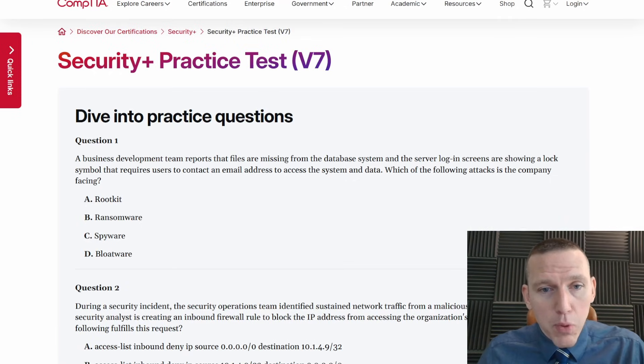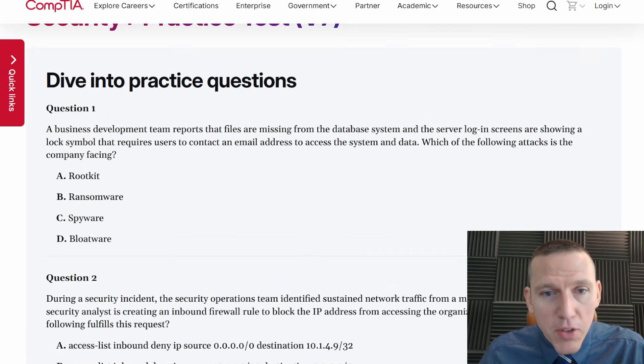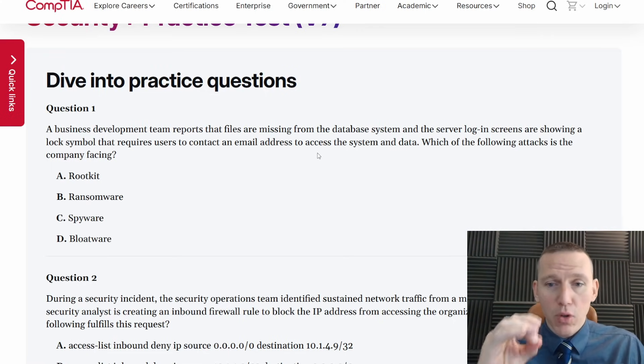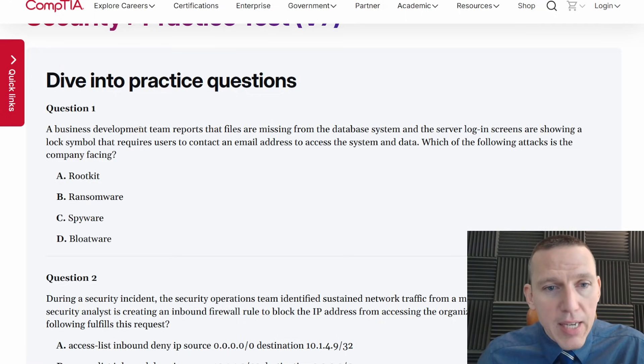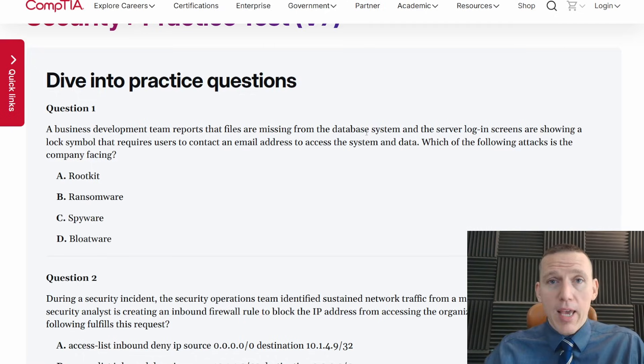A business development team reports that files are missing from the database system and server login screens are showing a lock symbol that requires user contact the email address to access system and data, which the following attacks is a company facing. I like to read the question twice, then read the answers and read the question again. When I read it twice, the second time what I'm doing is I'm summarizing what I've read because there's a lot of fluff in these CompTIA questions. Files are missing from the database system and login screen showing a lock symbol.